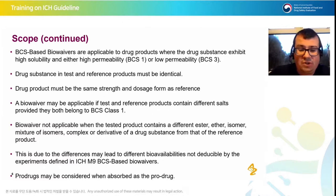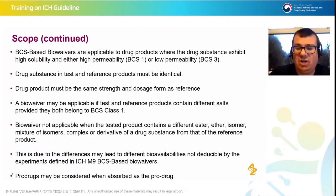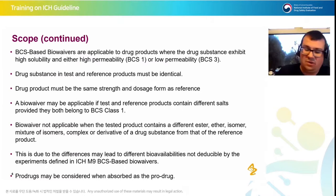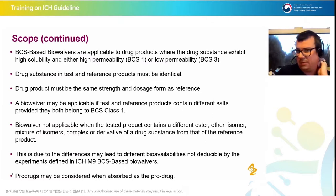This is due to differences that may lead to bioavailability issues not deducible by experiments defined in the ICH M9-based biowaiver. Pro-drugs can be considered but only when they are absorbed as the prodrug — if they undergo any hydrolysis, oxidation, or change during transit through the GI tract, they cannot be considered.